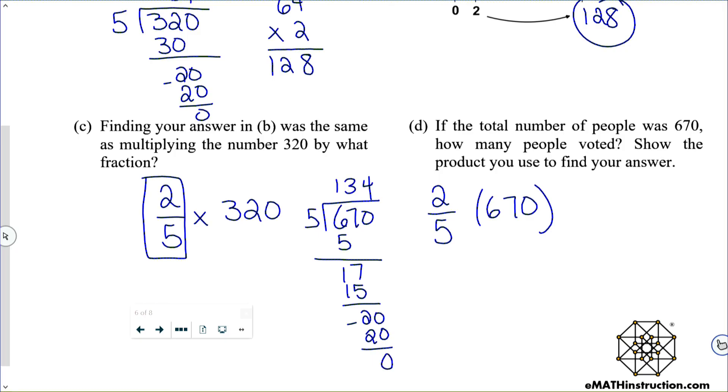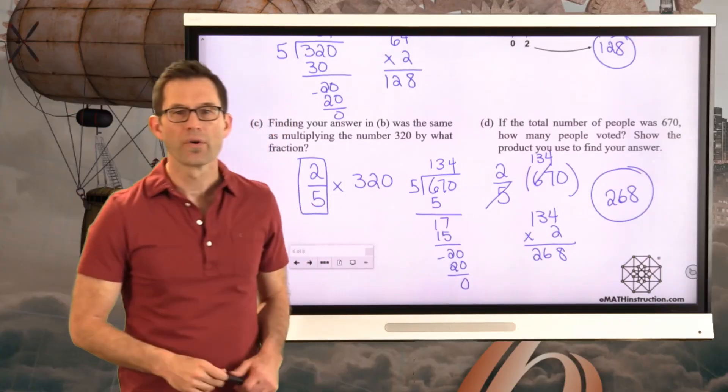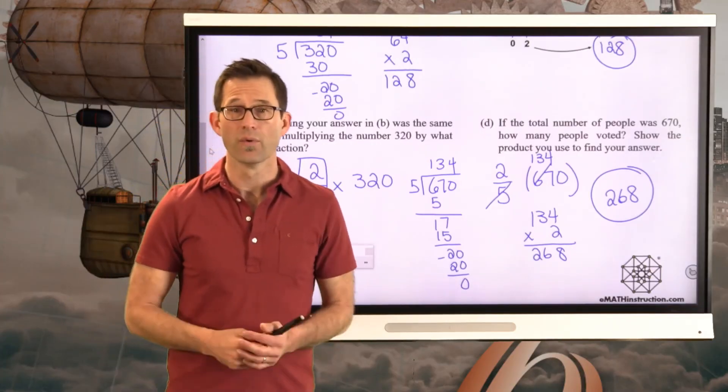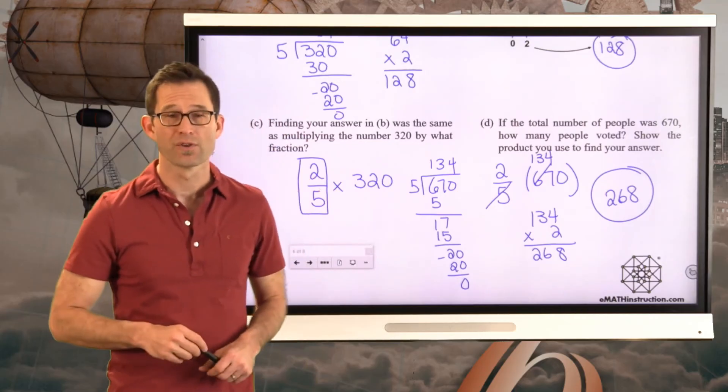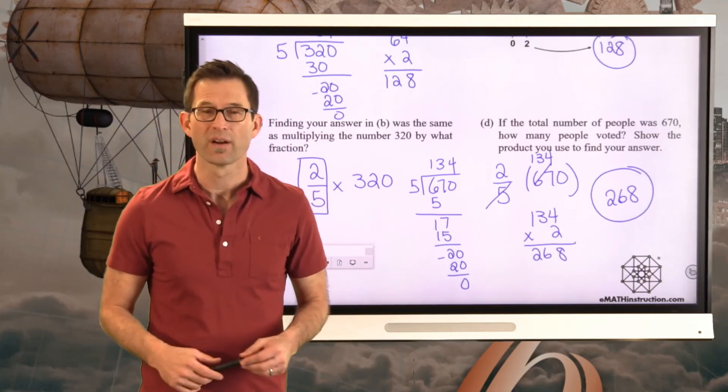I love long division. So we do this. We get 134. And then I do 134 times two, eight, six, two. So if there were 670 people, then 268 of them must have voted to keep that two-to-five ratio. Or two-fifths of the people voted.